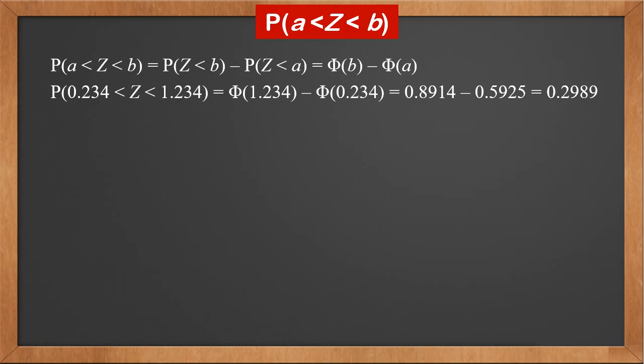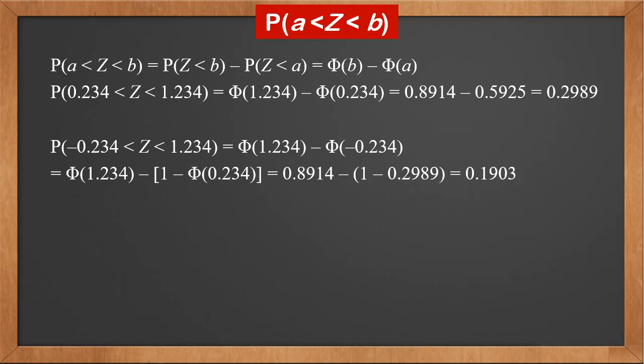If Z is between a negative value and a positive value, we can use phi(-z) = 1 - phi(z) to calculate the probability. For example, P(-0.234 < Z < 1.234) = phi(1.234) - phi(-0.234). We know phi(-0.234) = 1 - phi(0.234), so this becomes phi(1.234) - (1 - phi(0.234)) = 0.8914 - (1 - 0.5925) = 0.8914 - 0.4075 = 0.1903.